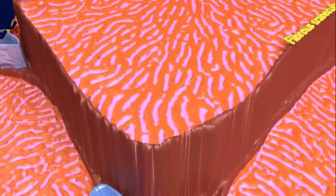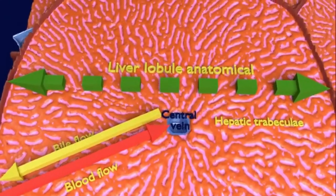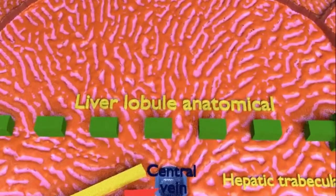Now, you can see in the central part of a single anatomical lobule, there is the central vein, which ultimately drains in hepatic vein.